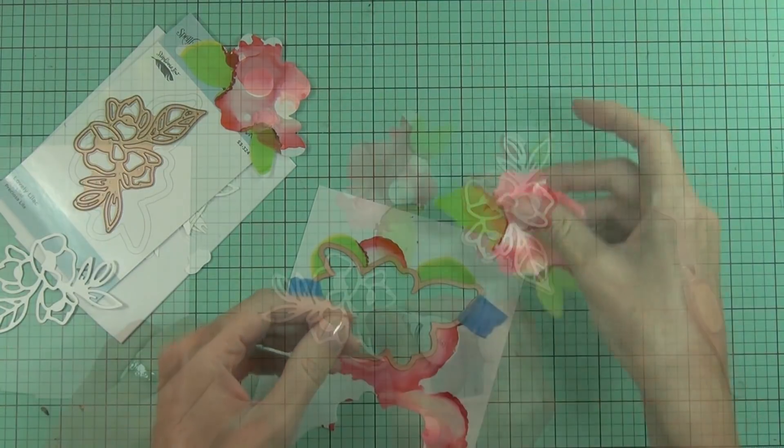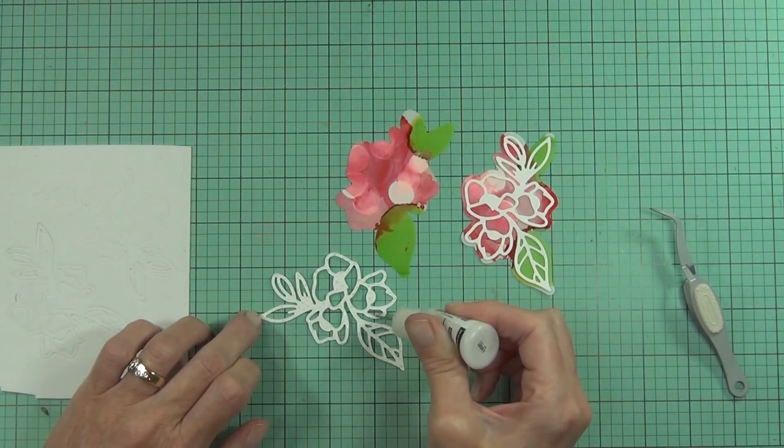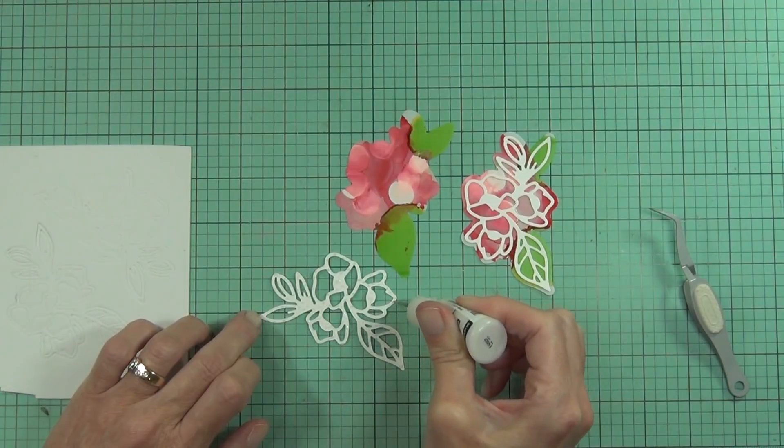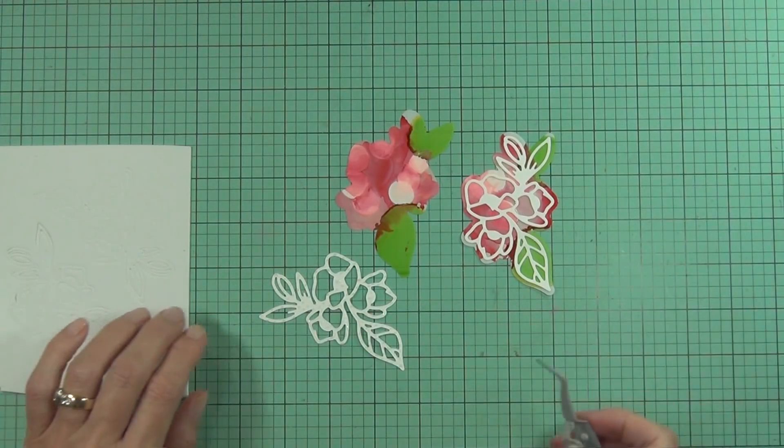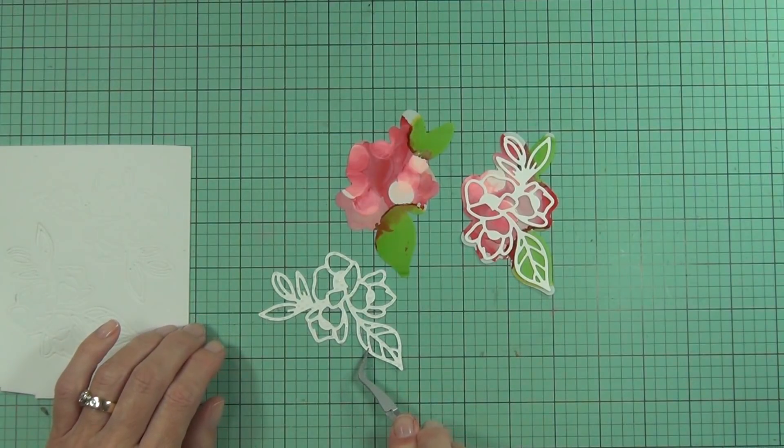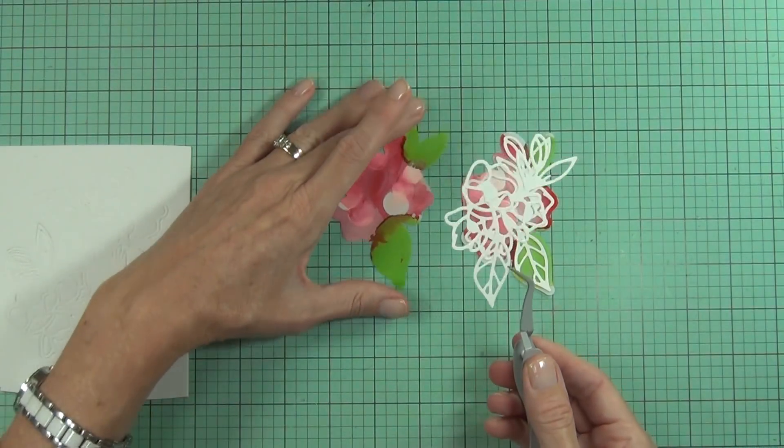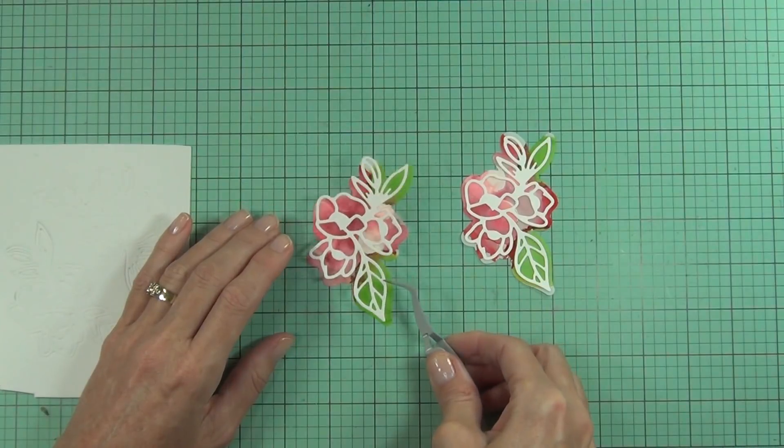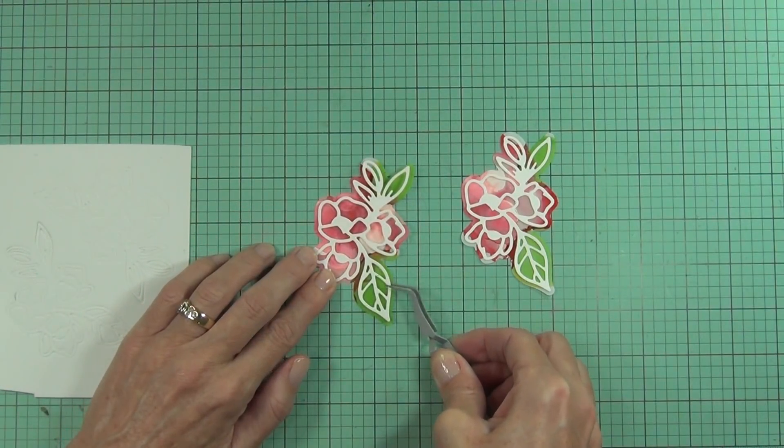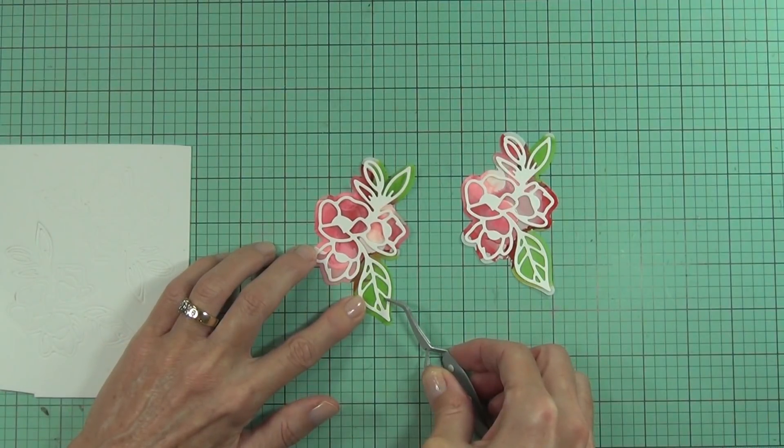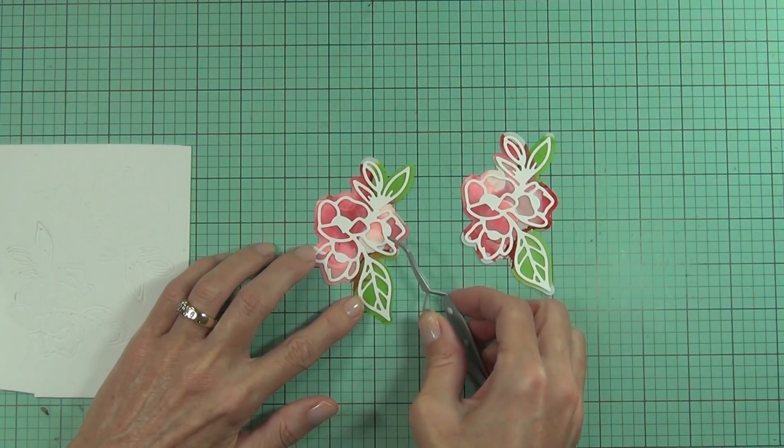Now it's time to get my outline die and I think this kind of works, even though I wasn't really happy with the way that my colors worked on the translucent Yupo paper. Because it's that real sort of artsy look, by die cutting them and adding this outline flower on top, I think they're really pretty.